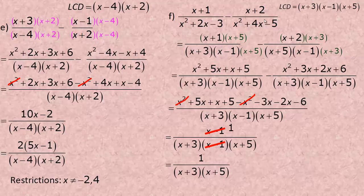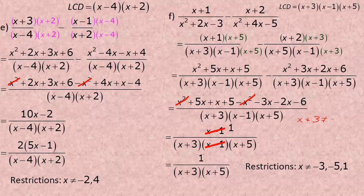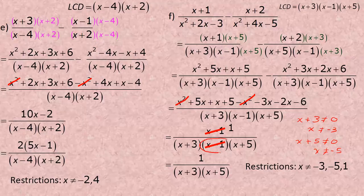The final answer is 1 over x plus 3 times x plus 5. For restrictions, there are three factors, giving three restrictions. Setting each factor equal to 0: x plus 3 equals 0 means x cannot equal negative 3; x plus 5 equals 0 means x cannot equal negative 5; and even though x minus 1 divided out, it still gives a restriction: x cannot equal 1. That's the end of the tutorial.